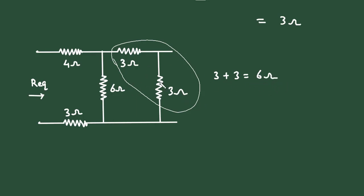Now this 6 ohm and this 6 ohm are connected in parallel. So 6 ohm parallel with 6 ohm, it will be 6 into 6 divided by 6 plus 6. Now when the value of both resistances in parallel are same, their equivalent resistance will be half of it.